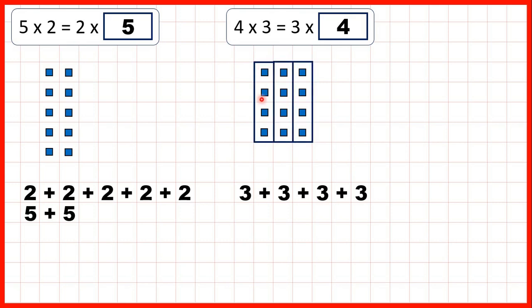But if we look at it the other way, we can also think of this array as showing 3 groups of 4. 4 plus 4 plus 4 makes 12 as well. That's why 4 times 3 gives us the same answer as 3 times 4. We can multiply numbers in any order.